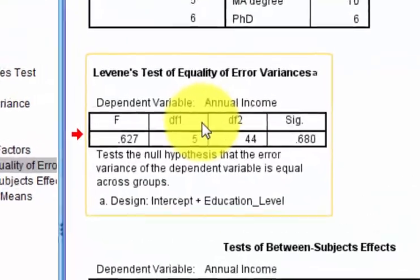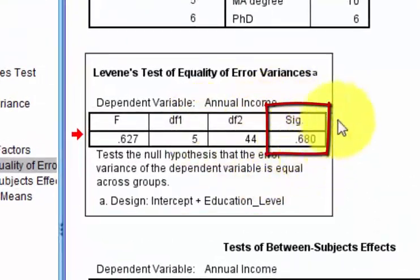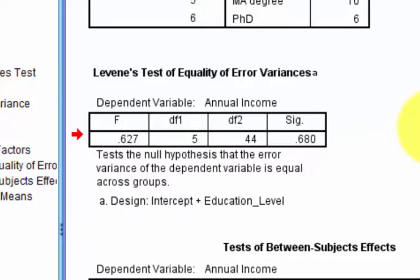And here's the Levine's test. And because it's not less than 0.05, the sig value is not less than 0.05, you do not reject the null. So in other words, it did not violate the assumption of homogeneity of variance.